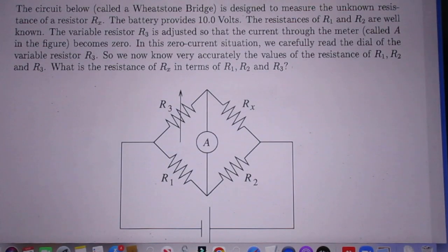Problem 144. The circuit below, which is called a Wheatstone bridge, is designed to measure the unknown resistance of resistor RX.